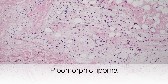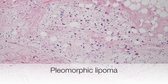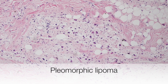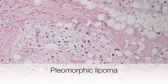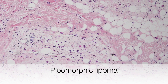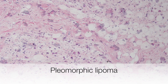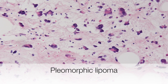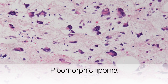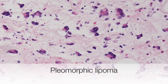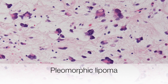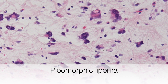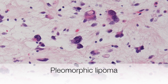This is a nice example of a pleomorphic lipoma and it is composed of adipocytes with nuclei of varying size and shape, some arranged in florets forming giant cells. So this is a good example of cellular and nuclear pleomorphism in a benign tumour.